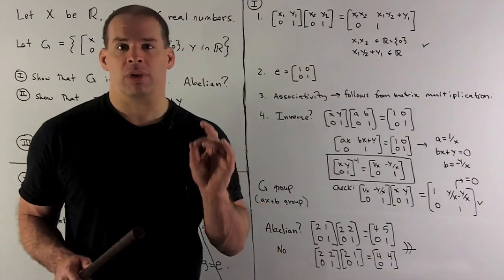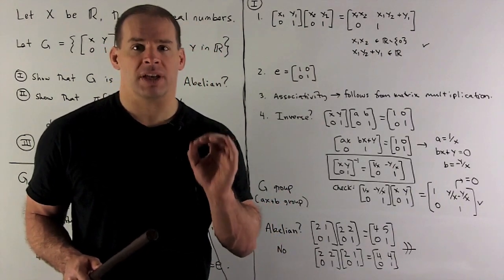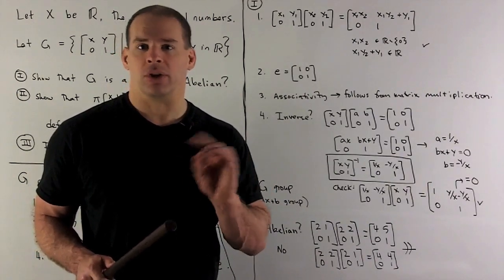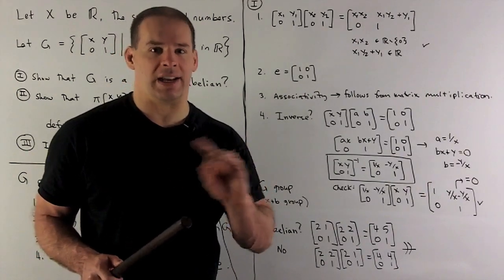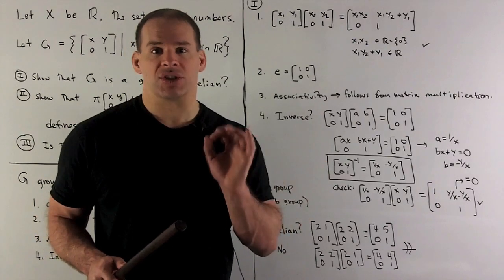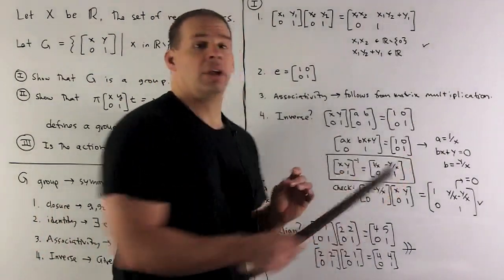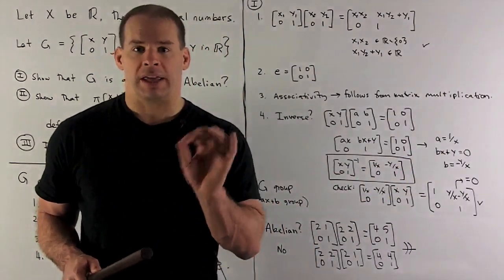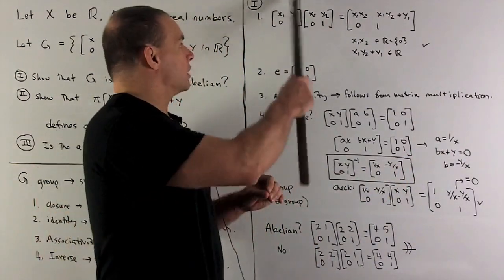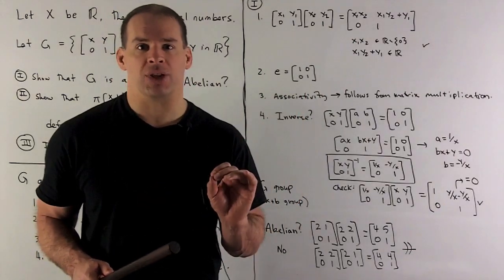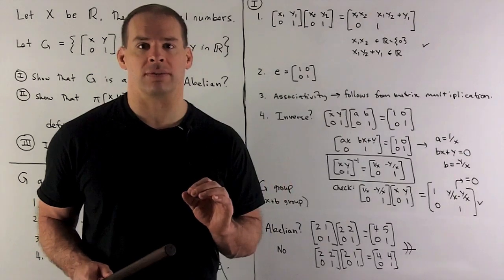For associativity, we don't really have to show anything here. Associativity is just going to be a product of matrix multiplication. That's going to hold whether you're looking at square matrices or any type of matrices. So that's just an inherited property. Of course, you could show that by picking any three matrices of this form and multiplying everything out to see that you get the same answer if you do your multiplication in the two different ways.